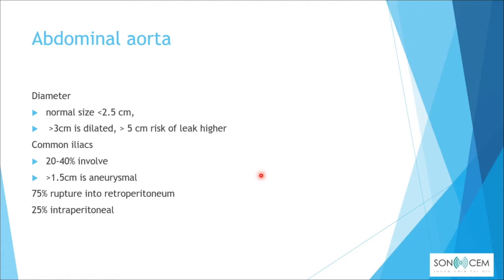For the abdominal aorta diameter, the normal size is less than 2.5 cm; more than 3 cm is considered dilated; and more than 5 cm carries a higher risk of rupture. For the common iliac arteries, there is 20 to 40 percent involvement, and a diameter of more than 1.5 cm is considered aneurysmal. In 75 percent of cases, rupture occurs into the retroperitoneum, and only 25 percent into the peritoneum.